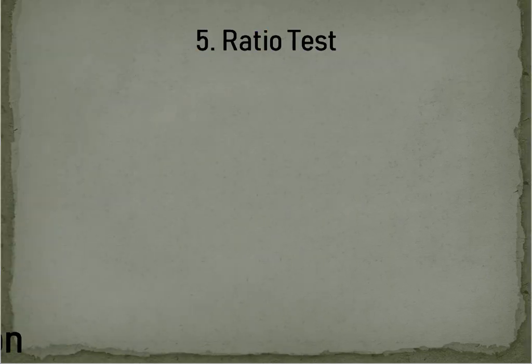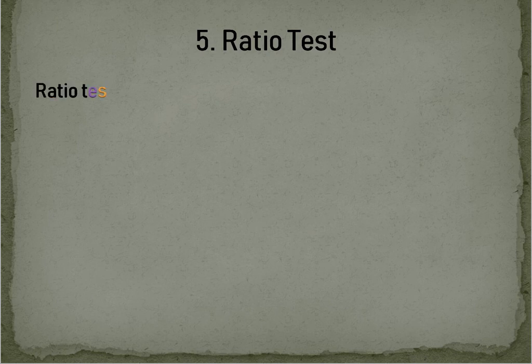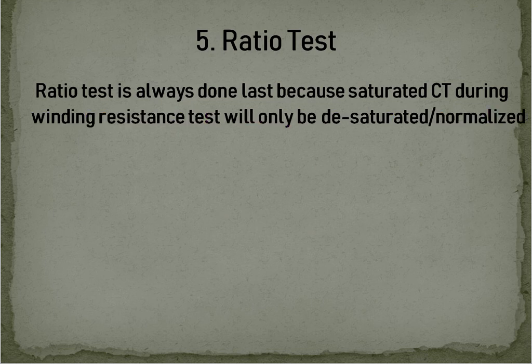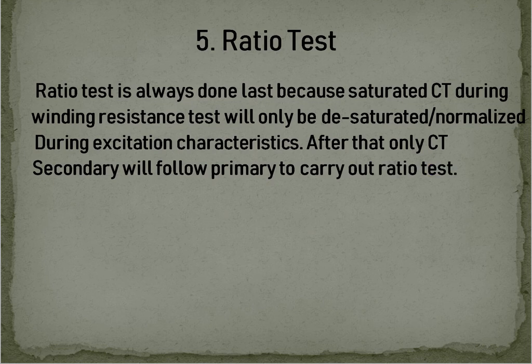Ratio Test: The Ratio Test is always done last, because the saturated CT from the Winding Resistance Test will only be desaturated or normalized during the Excitation Characteristics Test. Only after that will the CT secondary follow the primary, allowing the Ratio Test to be carried out.